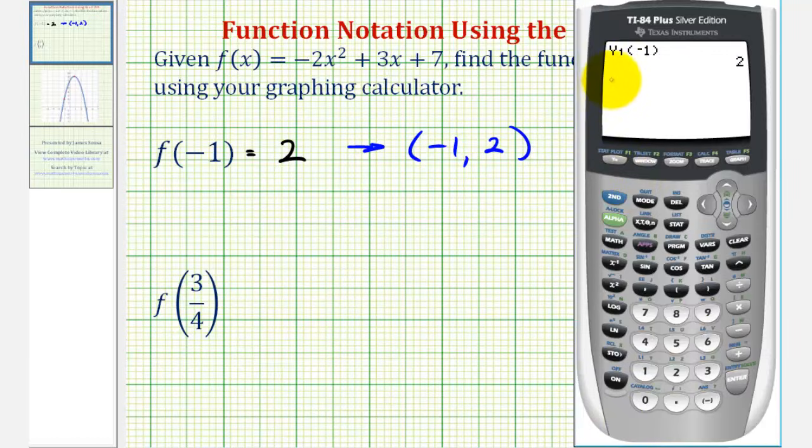We want to enter y1 again. Press vars, right arrow, enter, enter. Then in parentheses, 3 fourths: open parenthesis, 3 divided by 4, close parenthesis, enter.